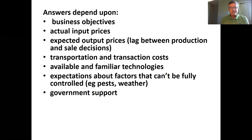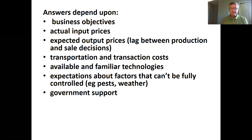What technologies are available and what technologies is a farmer used to and acquainted with? An important thing about technology is where can things be serviced — for example, that Canadian combine would not be able to be serviced in Ethiopia. And then there's much beyond the control of the farmer that's very important for agriculture: diseases like avian flu, which is affecting farmers in many parts of the world now, or pests like grasshoppers that we're getting this year in Alberta, or the weather — different rainfall, whether you have hail, whether you get floods. Agriculture is an inherently risky enterprise.